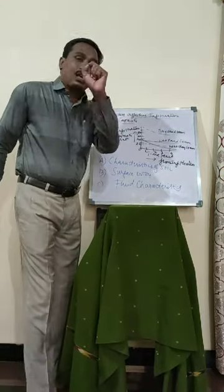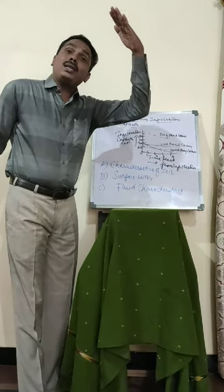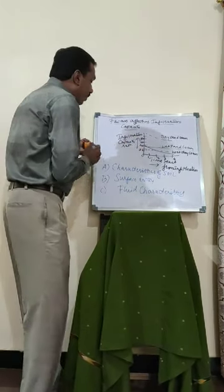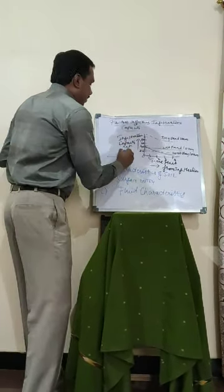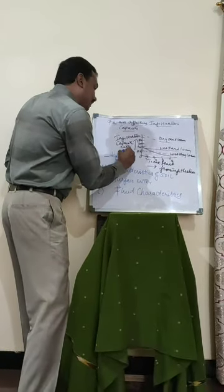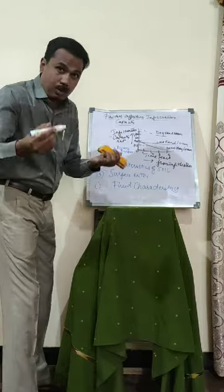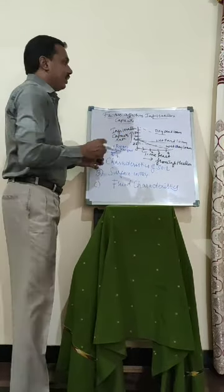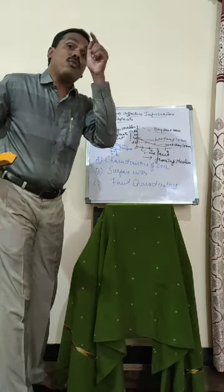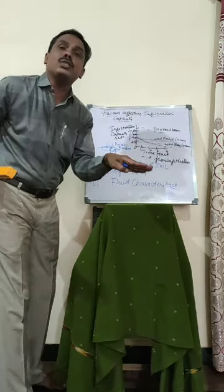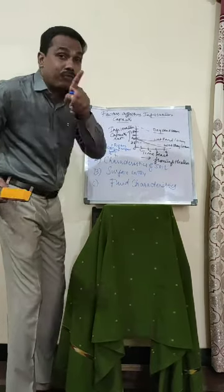The next factor is surface entry. We know that precipitation occurs in the atmosphere and will reach the surface. If there is a drizzle, the soil will get absorbed and the possibility of infiltration is very low. If there is a heavier rainfall, the soil will absorb some and the remaining part will infiltrate. The amount of water received from precipitation reaching the surface is also one of the factors affecting infiltration.